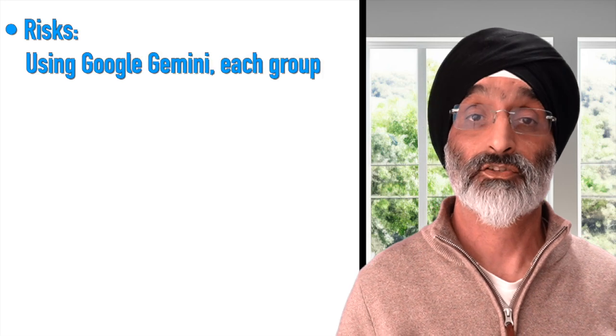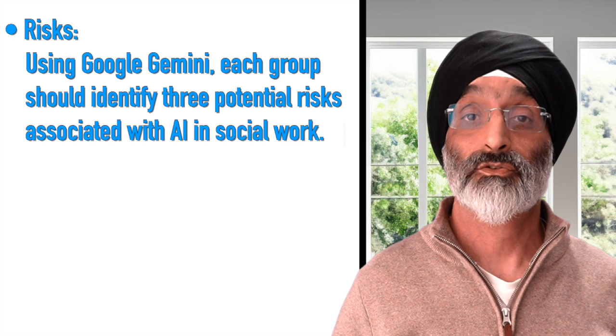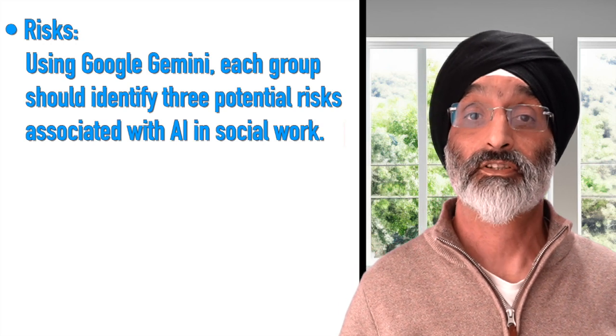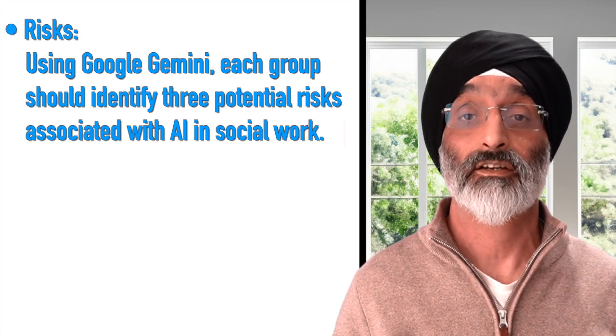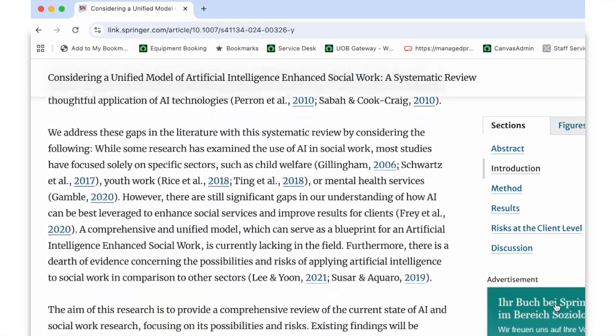For example, AI can support decision making and allow information to be shared between agencies. Similarly, I would ask each group to identify three potential risks associated with AI in social work, again asking them for detailed examples. I'd encourage learners to refer to the pages which cover potential risks associated with AI in the article. For example, dehumanisation of clients and insufficient research into the use of AI in social work. Then I would encourage them to use Gemini and go beyond the article to explore what Gemini AI comes up with.